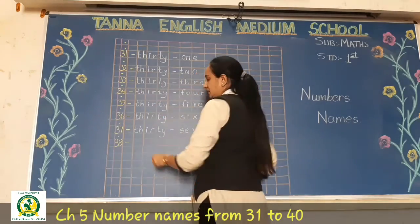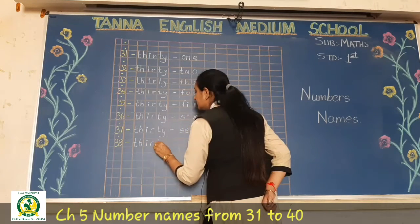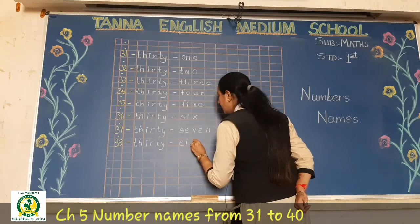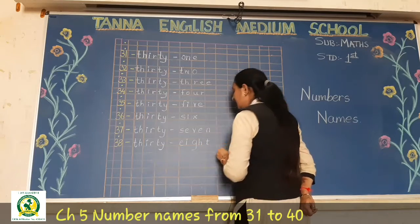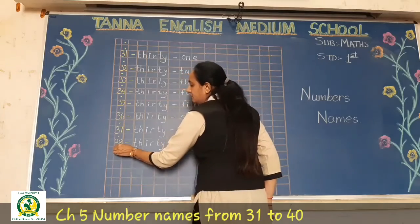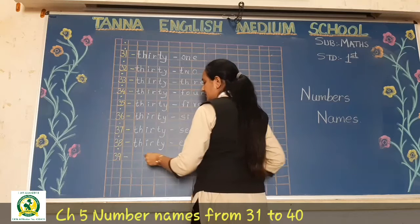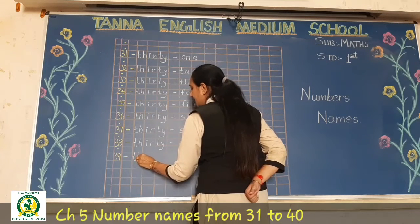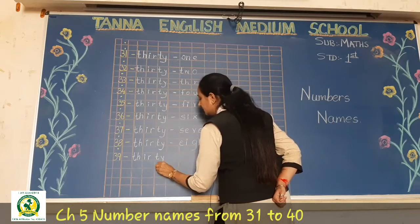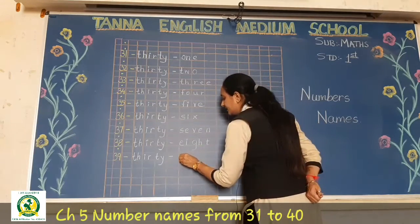Now after 37 comes 38. Write T-H-I-R-T-Y for 30 and the spelling of 8: E-I-G-H-T. Done. Again one box leave and write 39. The spelling of 39 is T-H-I-R-T-Y for 30, and the spelling of 9 is N-I-N-E.